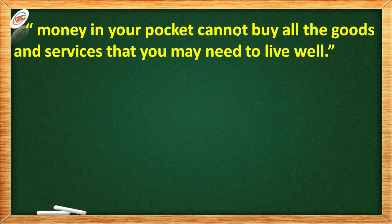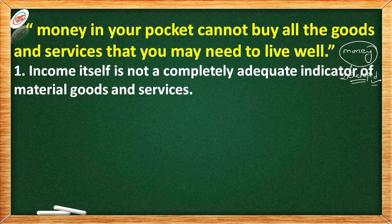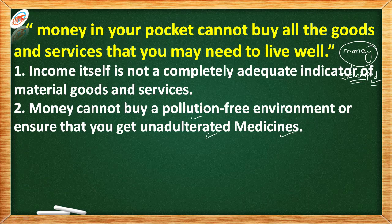Now there is one good question: money in your pocket cannot buy all the goods and services that you may need to live well. Here it is being told that using money as the only centralized aspect to consider a country or person as developed — is this thinking correct? The first point says income itself is not a completely adequate indicator of material goods and services. With money, you cannot buy a pollution-free environment or ensure that you get unadulterated medicine. Even if we pay for medicine, there is no guarantee it will be unadulterated.